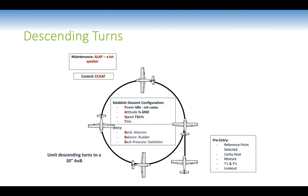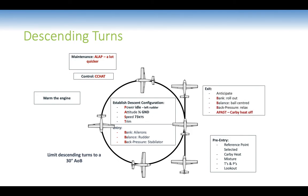Entry: bank 30 degrees, balance ball centred, back pressure — lower the nose slightly to maintain 73 knots. ALAP cycle runs quicker; controls use C-CHAT. Check attitude, look in direction of turn, attitude, and performance maintaining 73 knots. Check 30 degrees on the horizon, balanced, looking for target height. Warm the engine if descending past 3000 feet. Exit: anticipate — bank rollout, balance, back pressure — turn carby heat off and return to normal configuration.